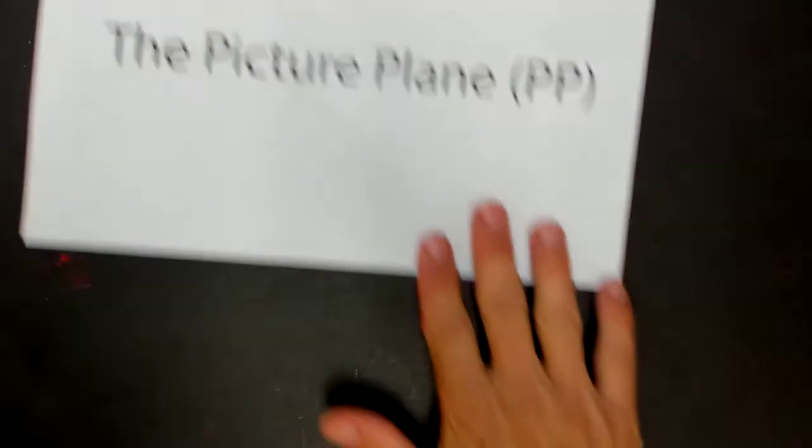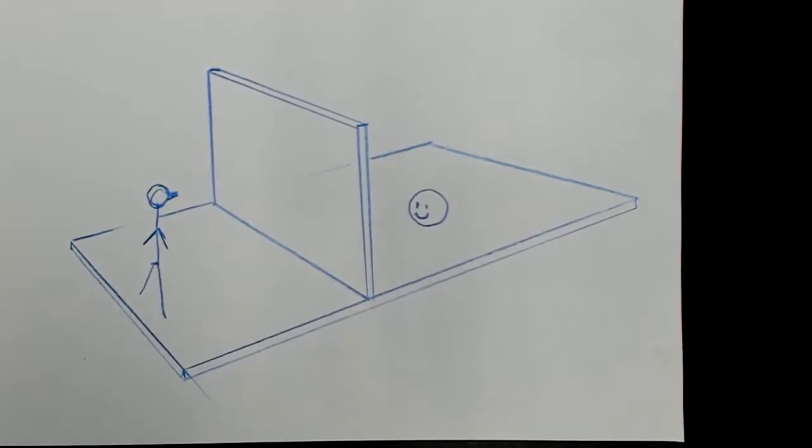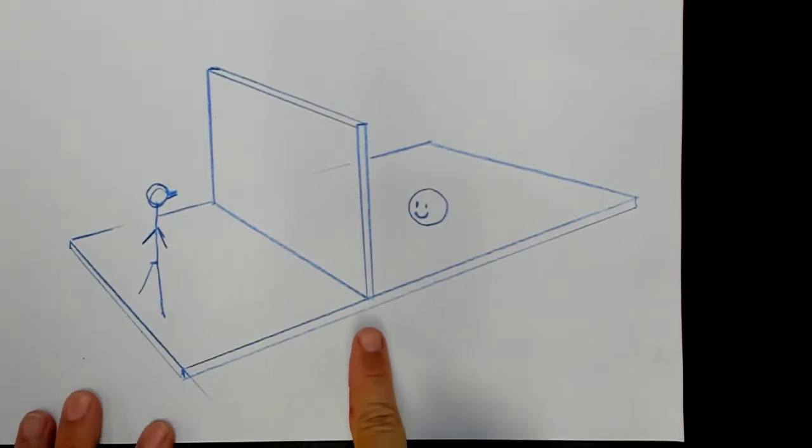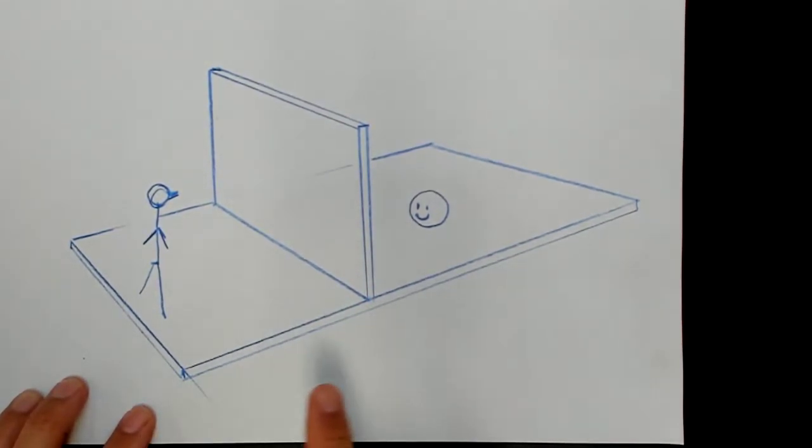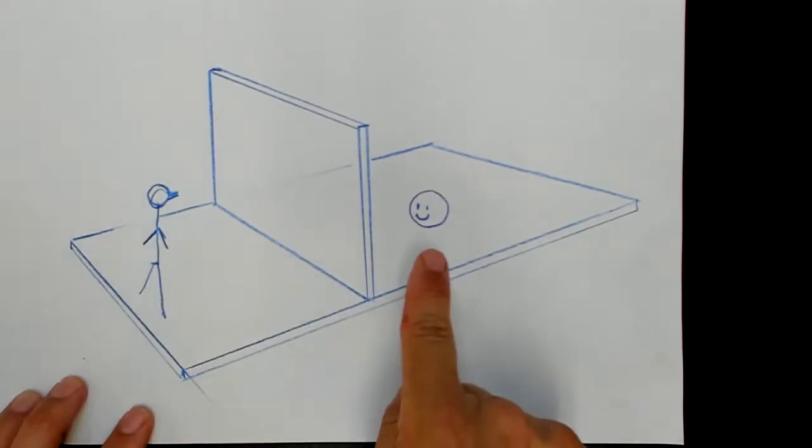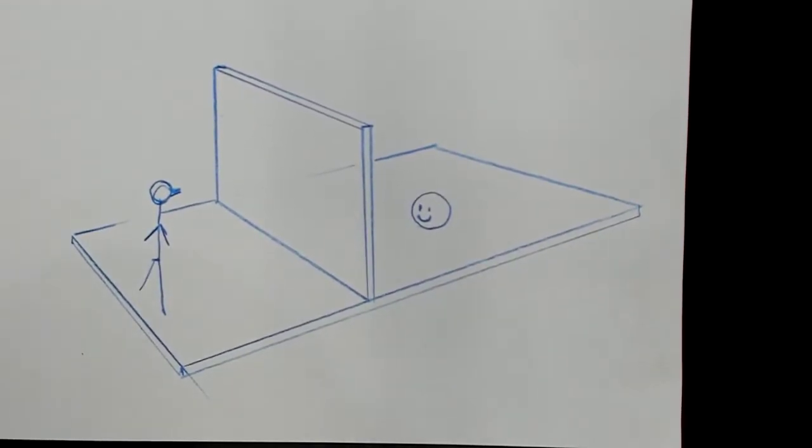For instance, if you put a piece of glass in between the viewer and the object that's being drawn and you trace on the piece of glass, you get a perfect picture. It looks like exactly what the thing is that you're drawing, if you're good at tracing.